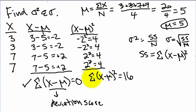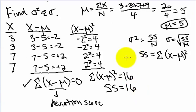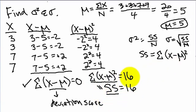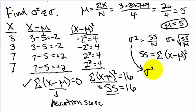The sum of the squared deviation scores is the same thing as SS — the sum of squares, or sum of squared deviation scores. So SS equals 16. Now we solve for the variance: variance equals SS over n, which is 16 over 4. We have four values — 3, 3, 7, 7. So the variance is equal to 4.